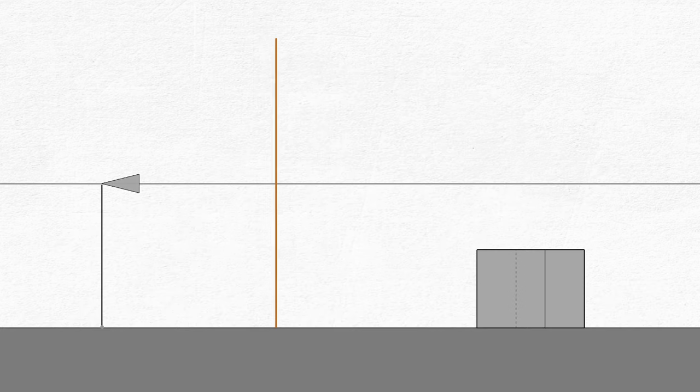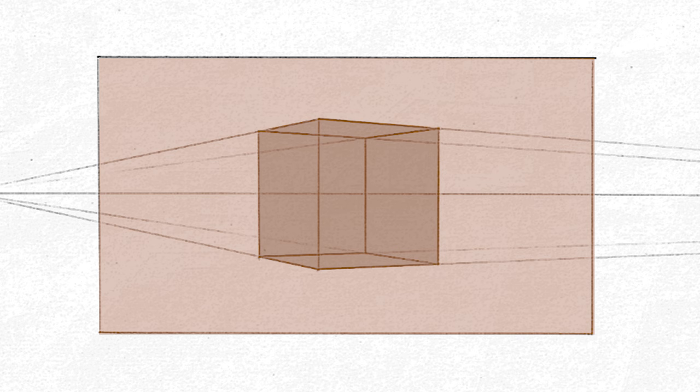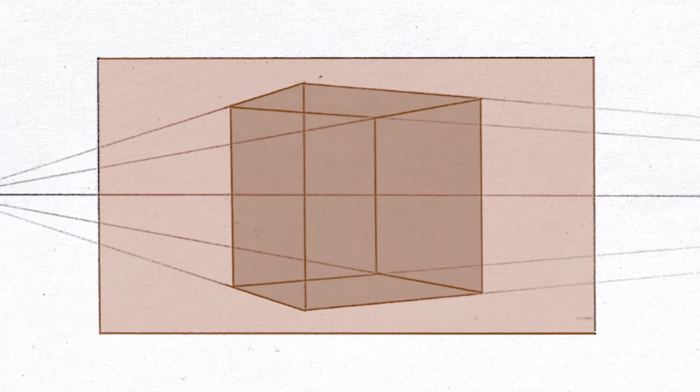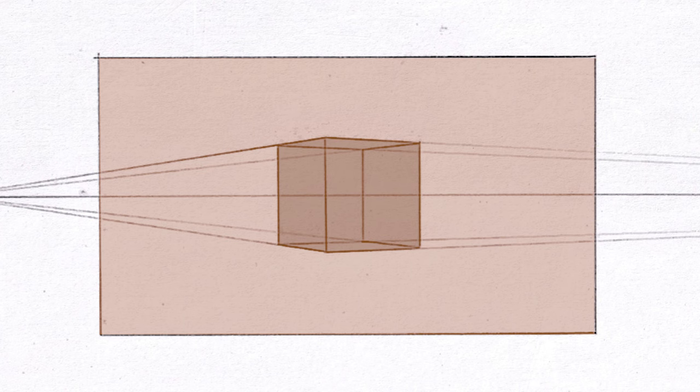When it comes to positioning the picture plane, we only have the option to shift this back and forth. As you move it closer to the subject, you are essentially zooming in and as you move it backwards towards the viewer, away from the subject, you are zooming out.